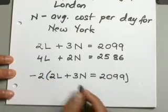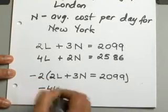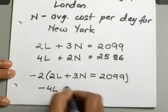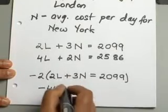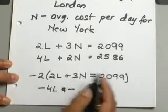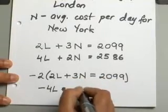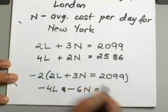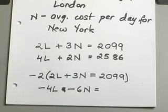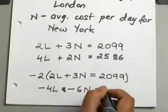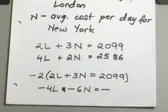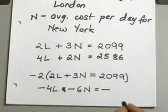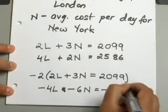This will give us negative 4L minus 6N, which equals negative 4,198.